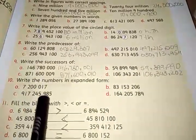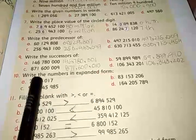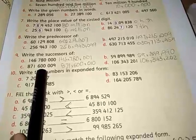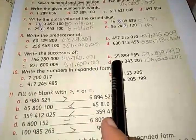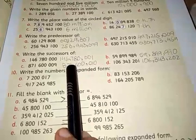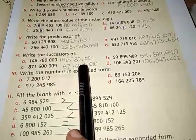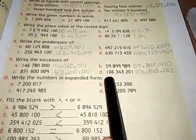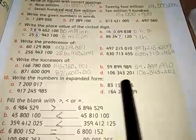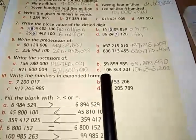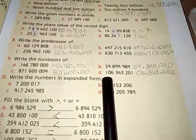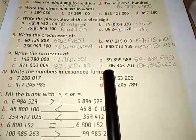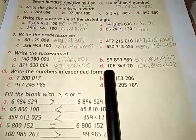Number C is 871,600,009. Number D is 106,343,201 and its successor is 106,343,202.